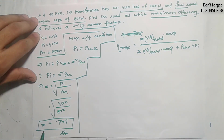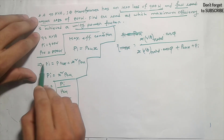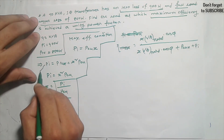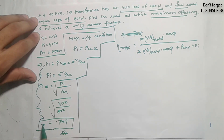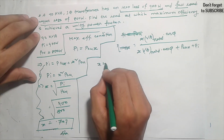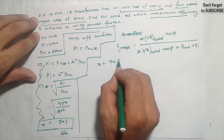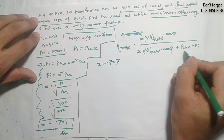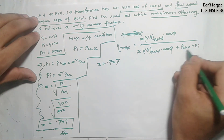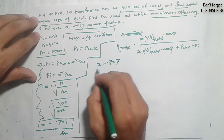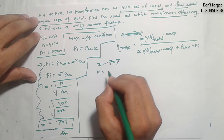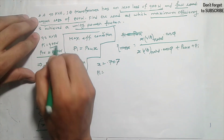When we're saying that the fraction of load is a load, so we make it a load. We're making it a fractional load of 0.707. Iron loss we're making equal to 400.